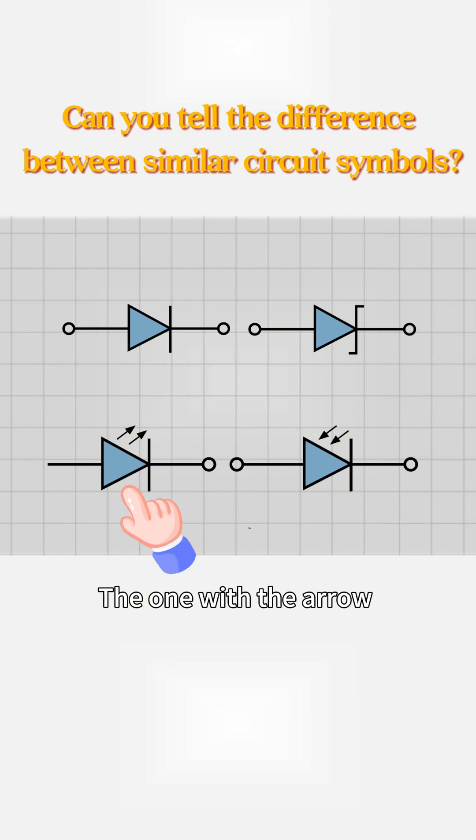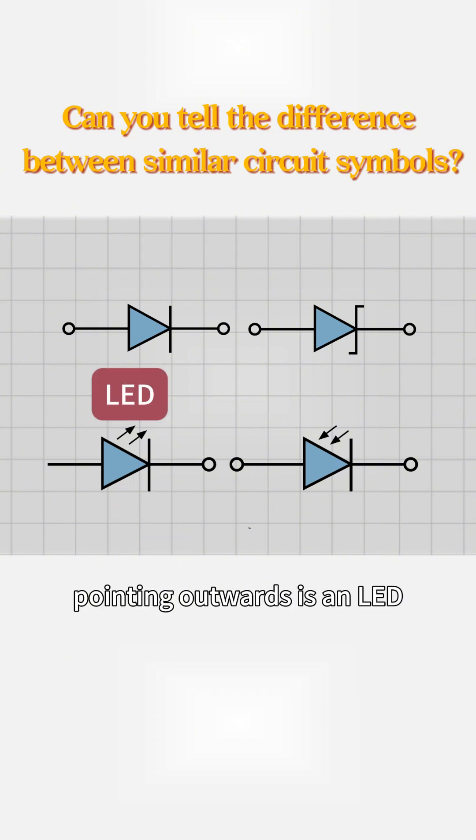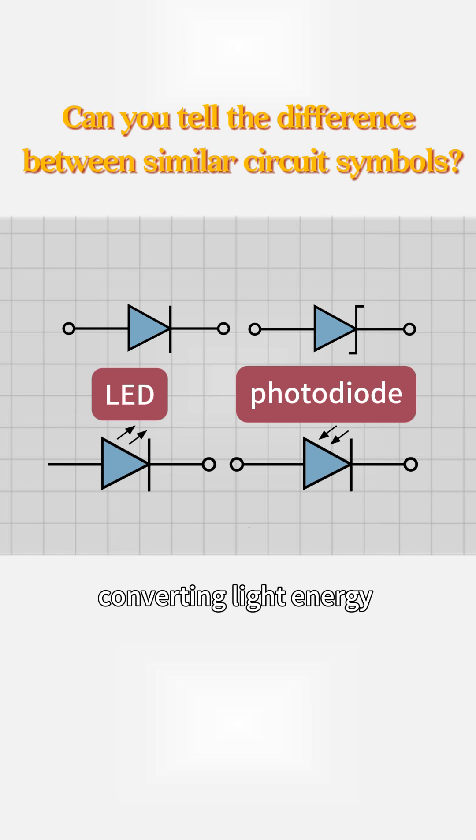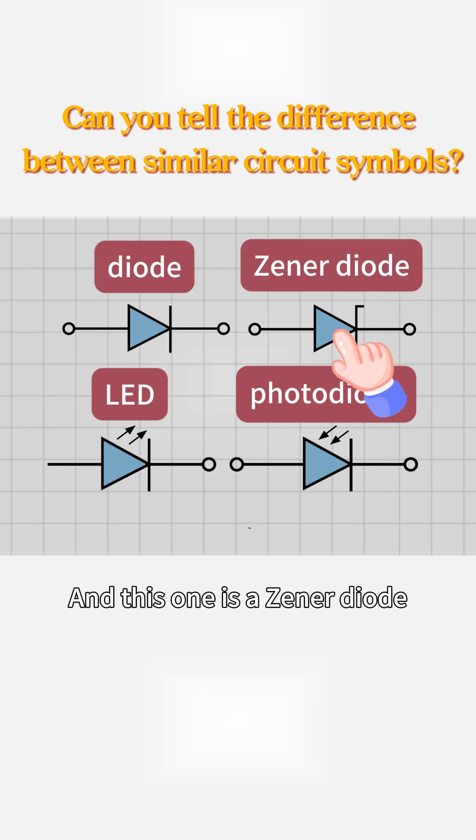Which one is a light emitting diode? The one with the arrow pointing outwards is an LED. The one with the arrow pointing inwards is a photodiode, converting light energy into electrical energy. This one is a regular diode, and this one is a zener diode.